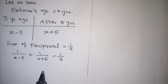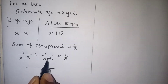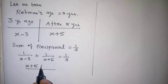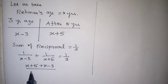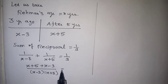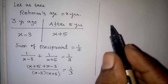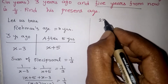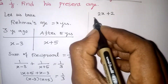Now we are going to take the LCM. So X plus 5 will multiply the first term and X minus 3 will multiply the second term. That gives us (X plus 5 plus X minus 3) divided by (X minus 3)(X plus 5), which is equal to 1 by 3.